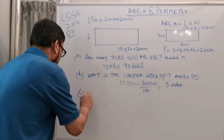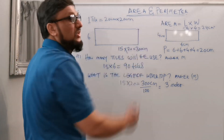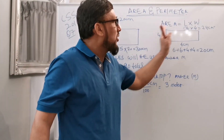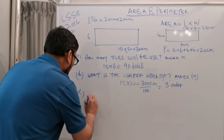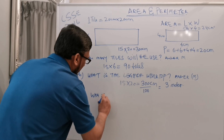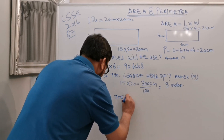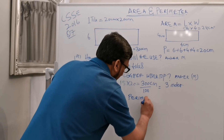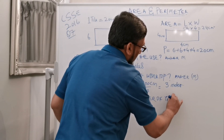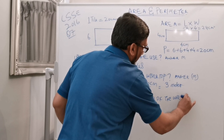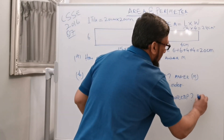Part C is asking: what is the perimeter of the worktop? Perimeter means to add up all sides to get the perimeter. The answer will be in meters.